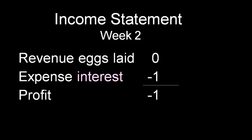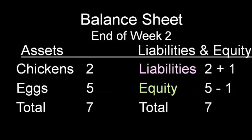In week two, let's say it's a bad week. We didn't have any eggs laid, so we have revenue of zero. However, we are still being charged an interest of one chicken — that still gets recorded. As a result, we have a negative one profit, which is called a loss. Nothing has happened on the left side of the balance sheet. On the right side, one is added to liabilities because we're being charged one chicken for that week, and a loss of one gets subtracted from equity. We're just transferring one from equity to liability, and our total of seven remains the same.